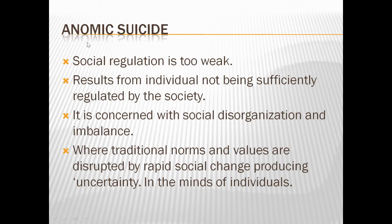The third type is anomic suicide. This is related to social regulation, that is the control of the society upon the individual. Now if the social regulation is too weak, bohat weak hai, toh us ko bolte hai the third type of suicide, that is anomic suicide. It results from the individual not being sufficiently regulated by the society. It is concerned with social disorganization and imbalance.